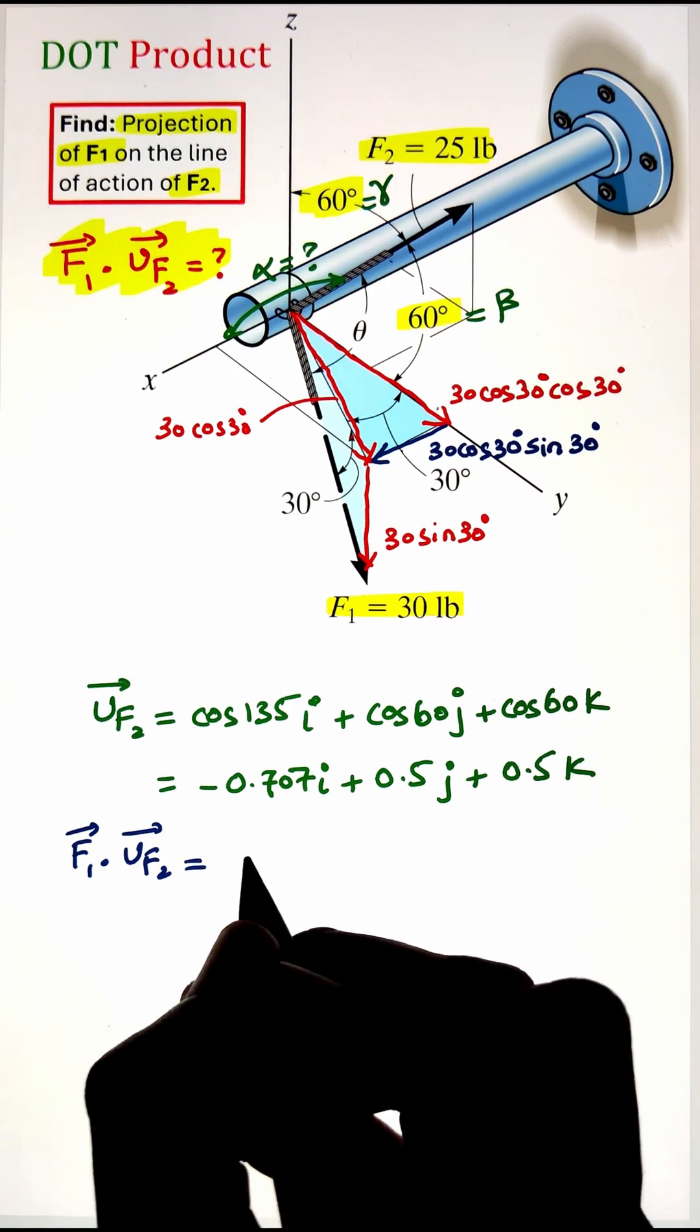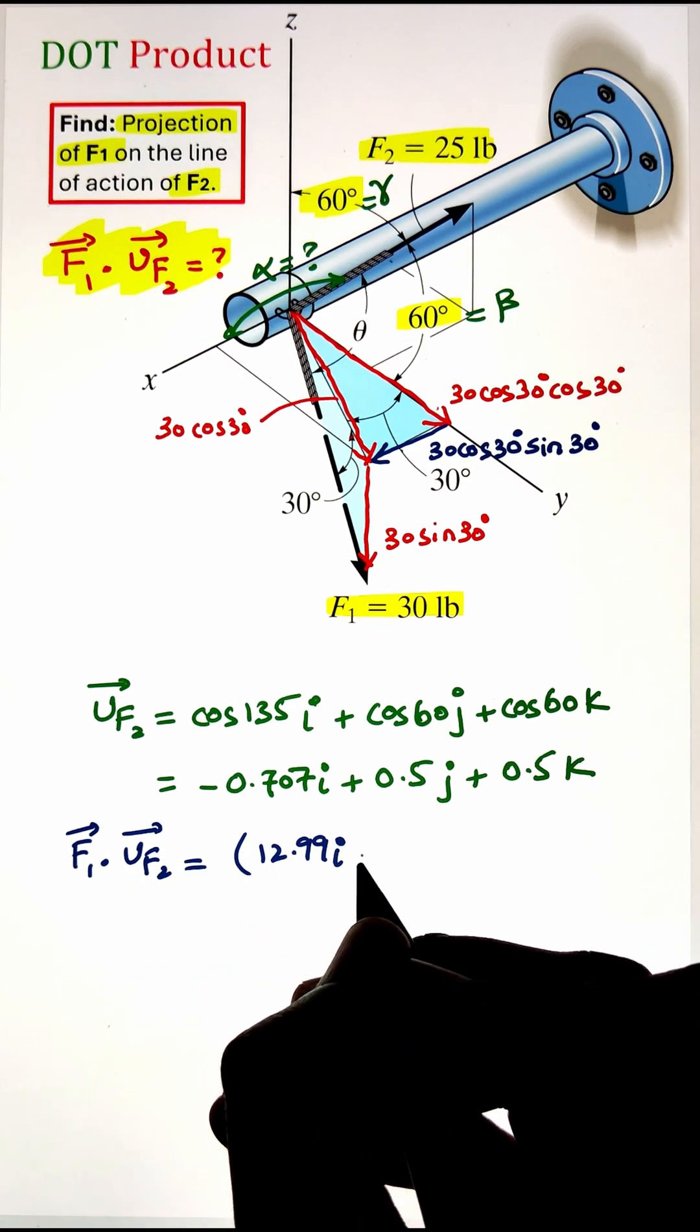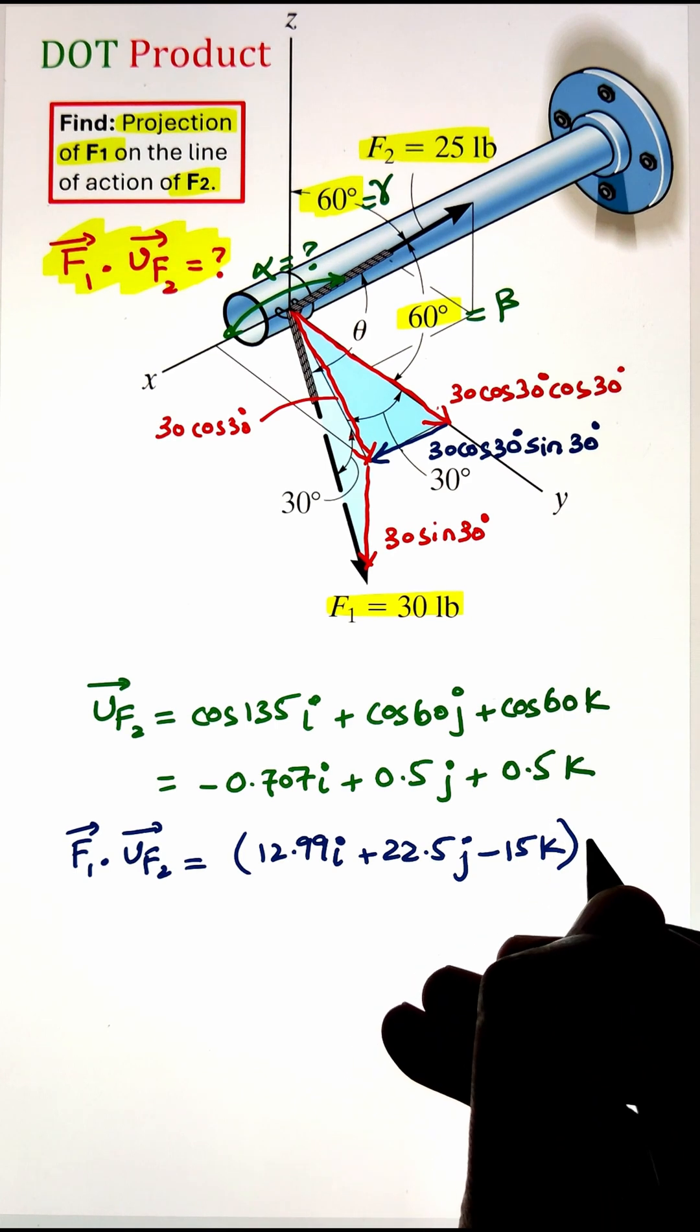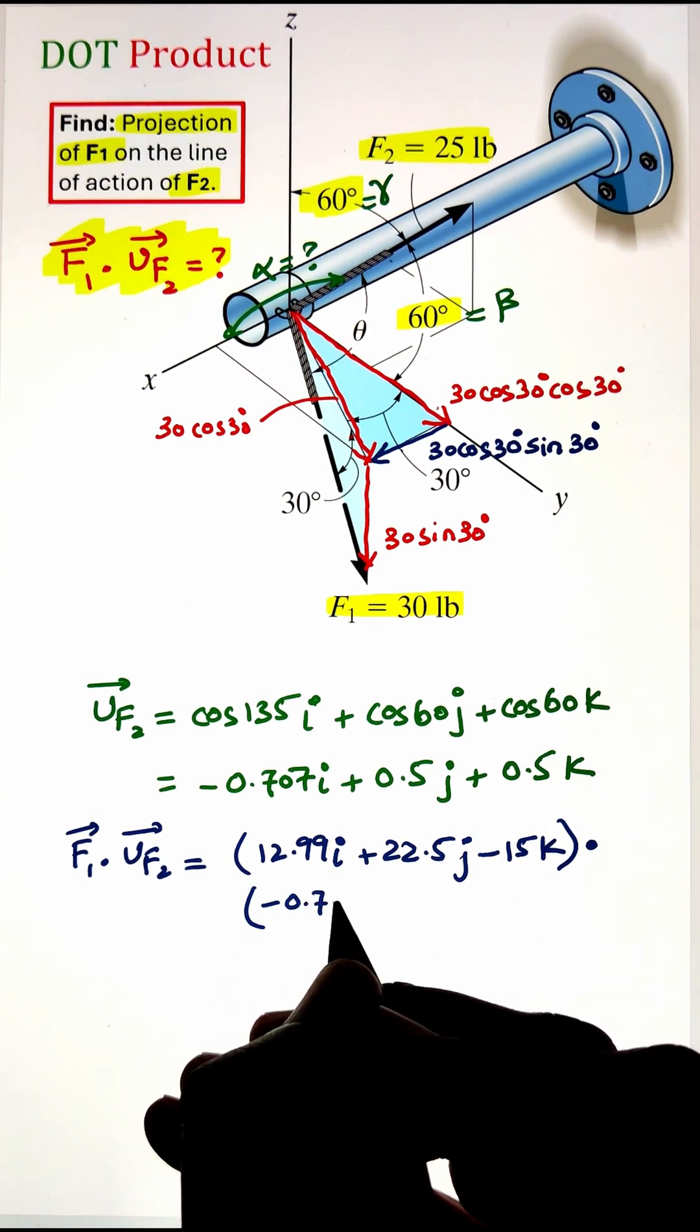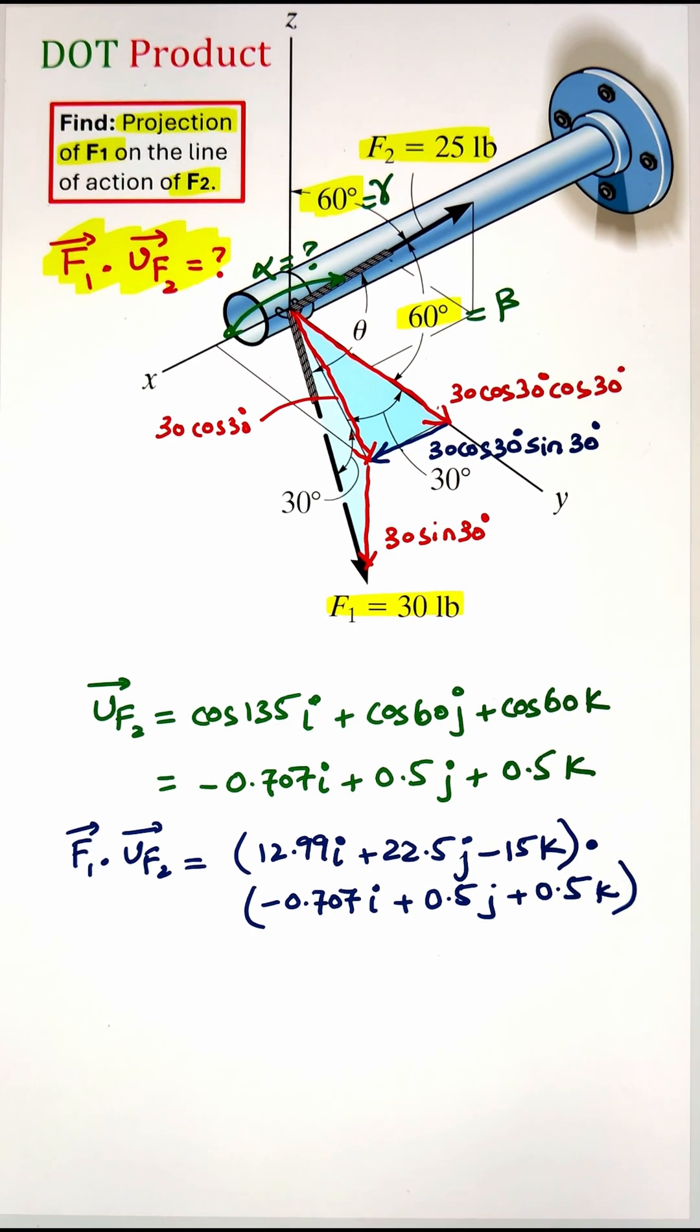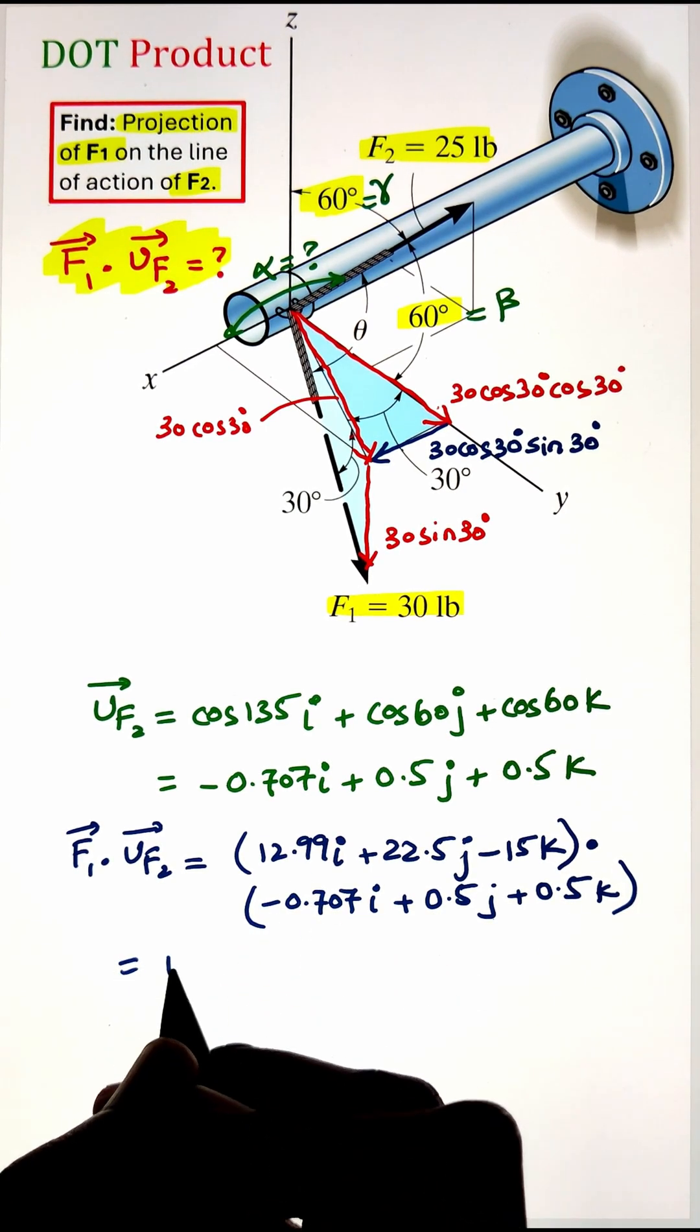Finally, let's go ahead and take the dot product between the force vector F1 and the unit vector of force F2. Now for the dot product, we know that i dot i, j dot j, and k dot k equals 1, whereas the dissimilar components like i dot j or j dot k will give us the value of 0.